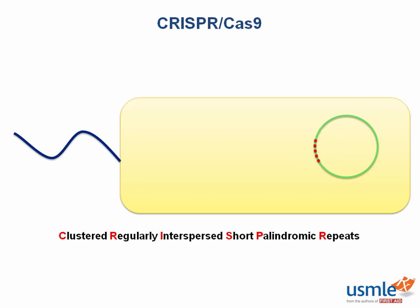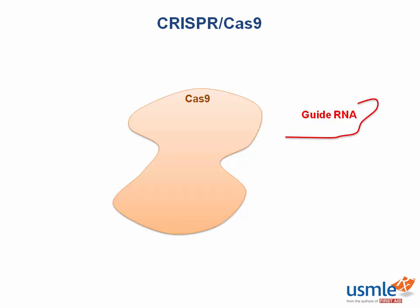So how does this work? Let's say that a virus is attacking this bacterium and the virus releases its DNA into the cell. How can the bacterium defend itself? That's where CRISPR comes in. The CRISPR system has two parts: one is a protein called Cas9, where Cas stands for CRISPR-Associated System, and the other is a guide RNA. Both of these are encoded within that repeat sequence in the bacterial DNA.